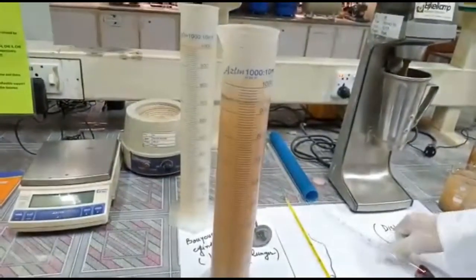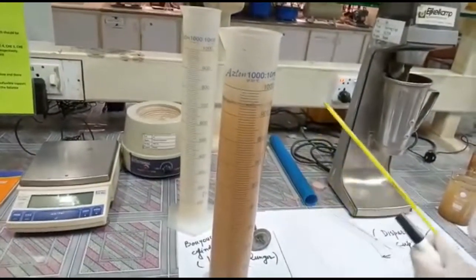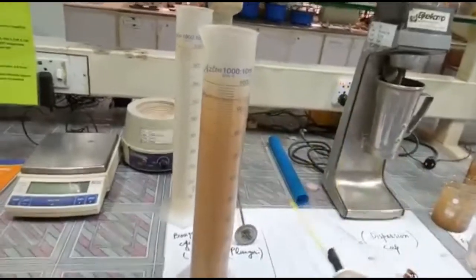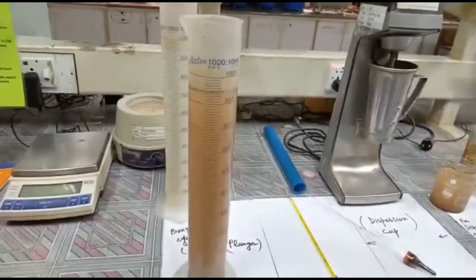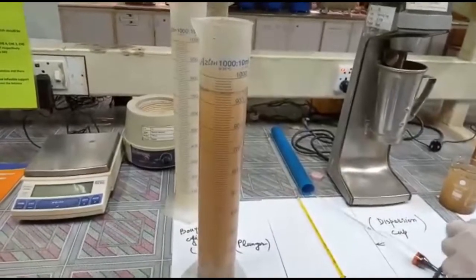After this, this is a thermometer to check the temperature of this suspension. This is a plunger to shake the soil water suspension.